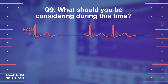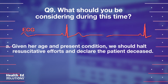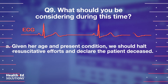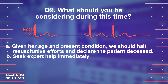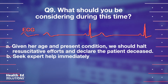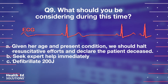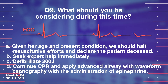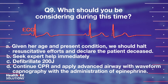Question 9: What should you be considering during this time? A. Given her age and present condition, we should halt resuscitative efforts and declare the patient deceased. B. Seek expert help immediately. C. Defibrillate 200 joules. D. Continue CPR and apply advanced airway with waveform capnography with the administration of epinephrine.